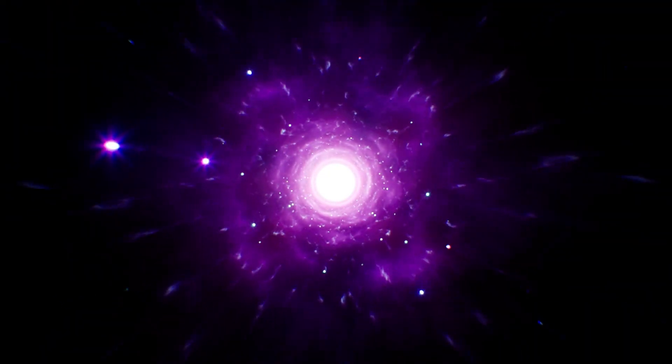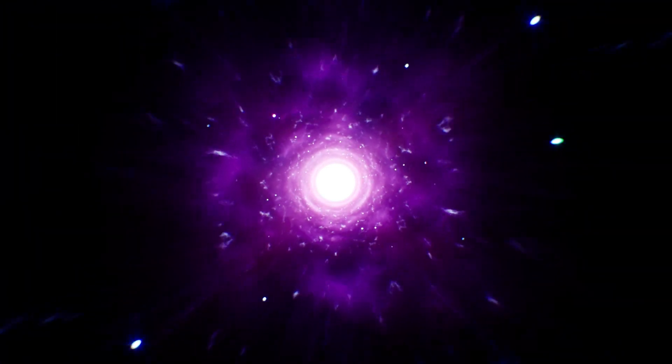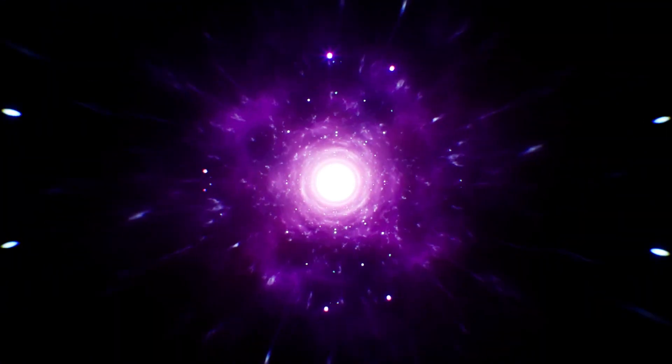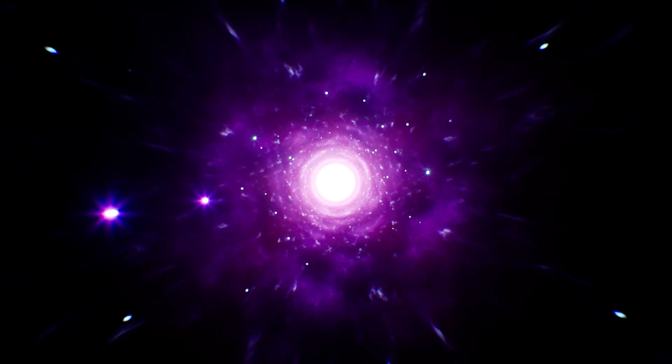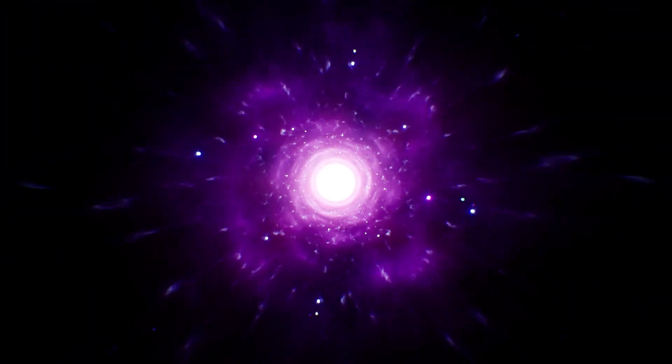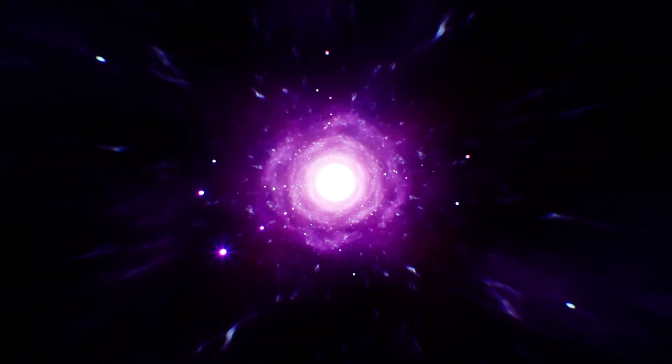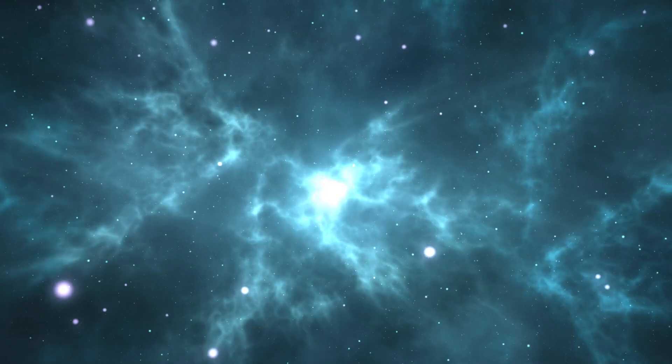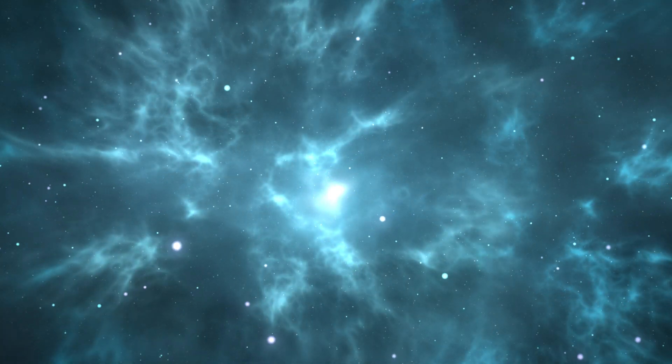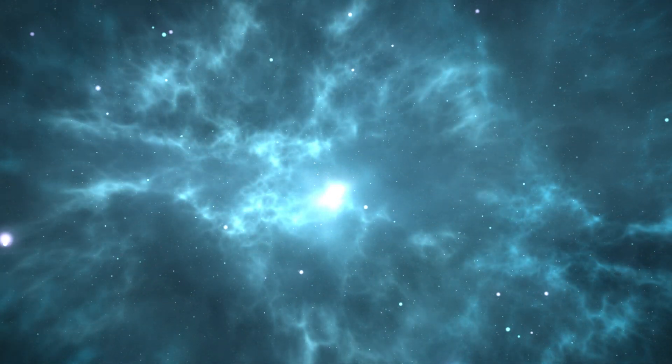Dark stars, as hypothesized, would blend dark matter with the familiar hydrogen and helium that constitute regular stars. Interestingly, despite their moniker, dark stars could emit light, particularly if dark matter annihilation produces gamma rays or other radiation forms. This process could heat the star's normal matter, causing it to glow.